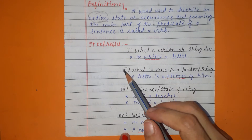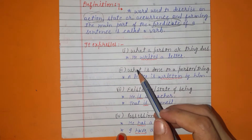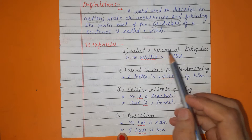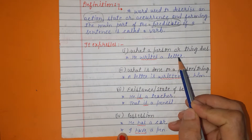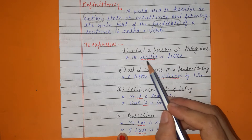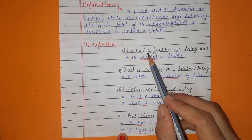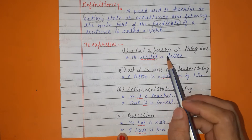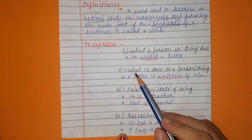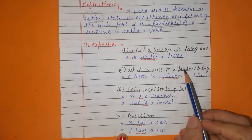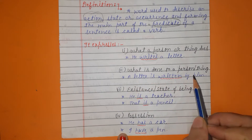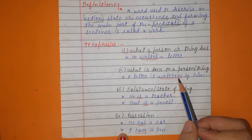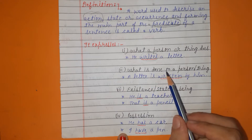Now, what does a verb express? First, what a person or thing does — example: 'He writes a letter.' Here 'writes' is a verb indicating what a person or thing does. Second, what is done to a person or thing — example: 'A letter is written by him.' Here the underlined word 'written' is a verb showing what is done to a person or thing.